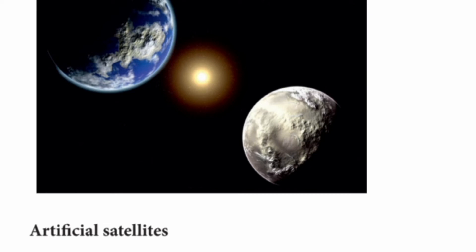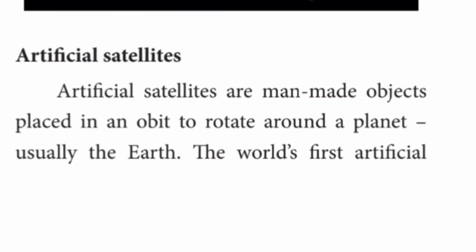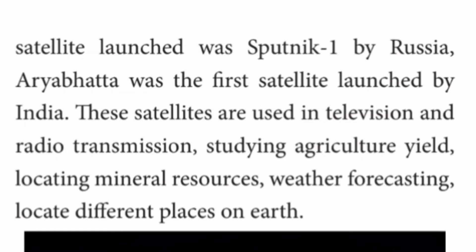Artificial satellites are man-made objects placed in an orbit to rotate around a planet, usually the Earth. The world's first artificial satellite launched was Sputnik-1 by Russia. Aryabhata was the first satellite launched by India. These satellites are used in television, radio transmission, studying agriculture yield, locating mineral resources, weather forecasting, and observing different places on Earth.